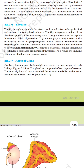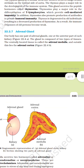Thymus. The thymus gland is a lobular structure located between the lungs behind the sternum on the ventral side of the aorta. The thymus plays a major role in the development of the immune system. This gland secretes peptide hormones called thymosins. Thymosins play a major role in the differentiation of T lymphocytes, which provide cell-mediated immunity. In addition, thymosins also promote production of antibodies to provide humoral immunity. The thymus degenerates in old individuals resulting in decreased production of thymosins, and as a result the immune response of old persons becomes weak.